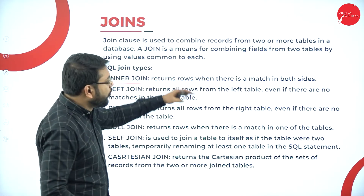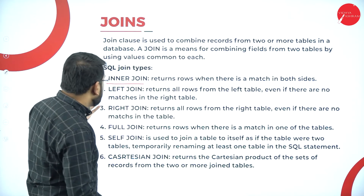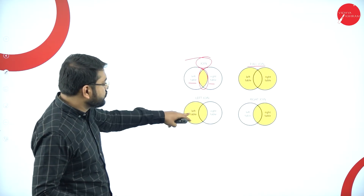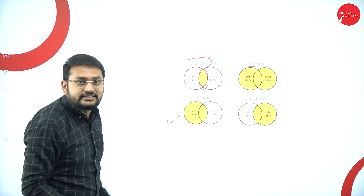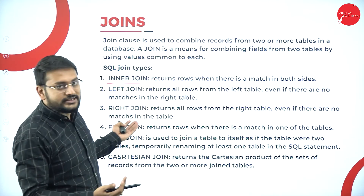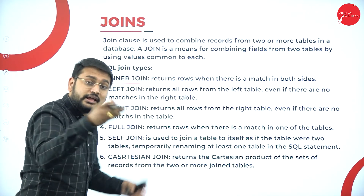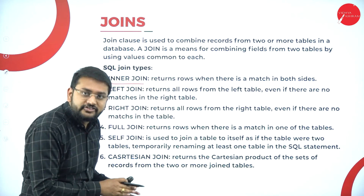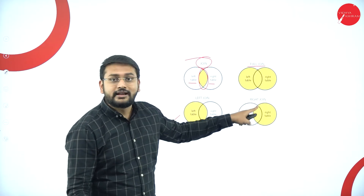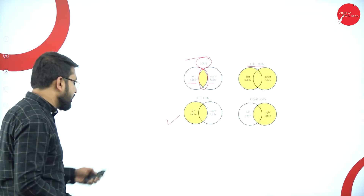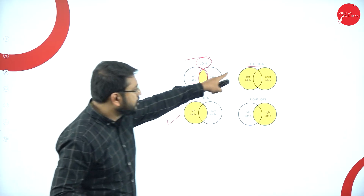Let me summarize the types of joins. Inner Join returns rows when there is a match in both tables — that's the first diagram. Left Join returns the complete left-side table including matching rows from the right side. Right Join is opposite to the left join — the complete right-side table including similarities from the left side. Full Join gives you both tables combined — all columns from both the left and right sides.